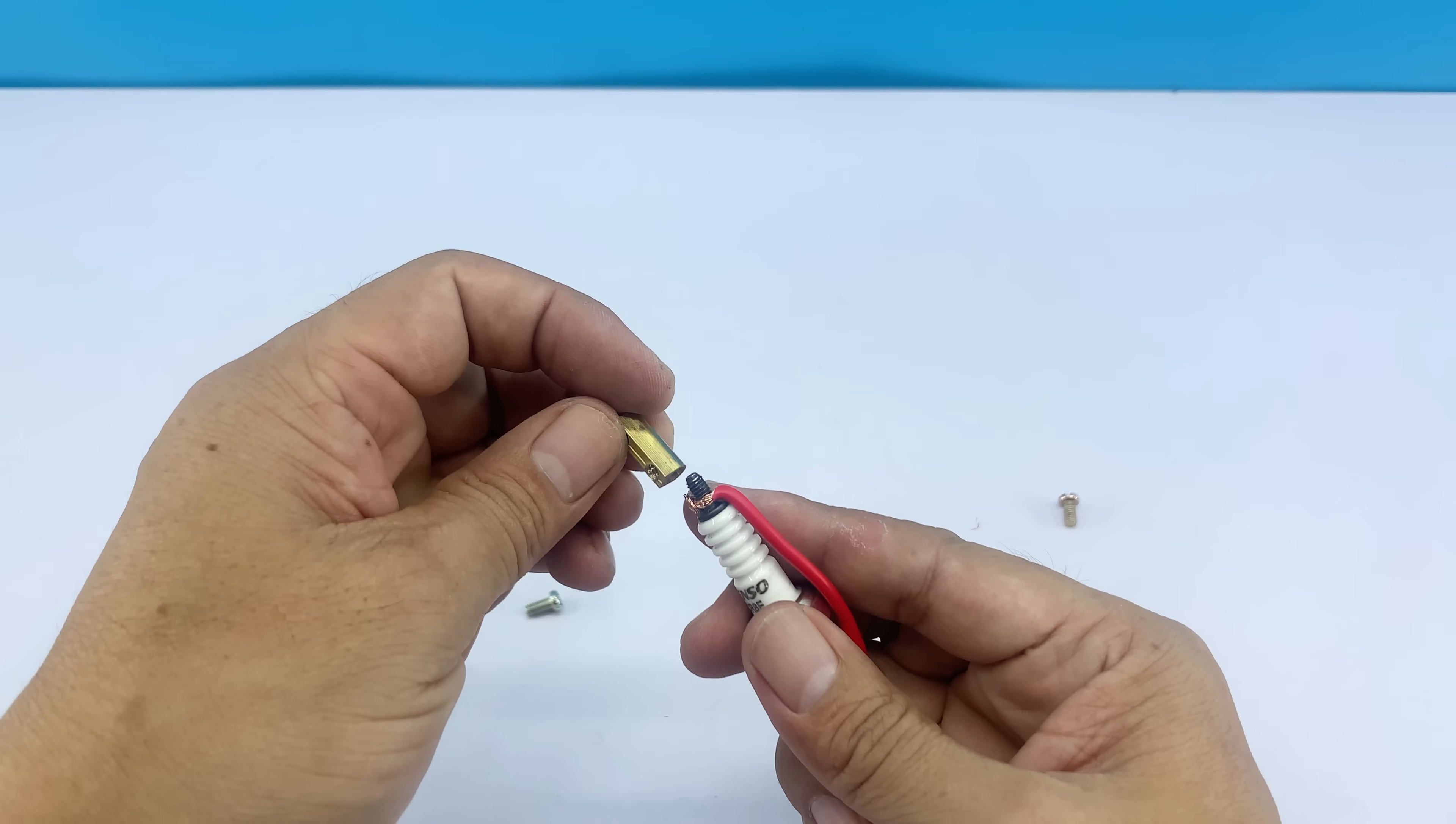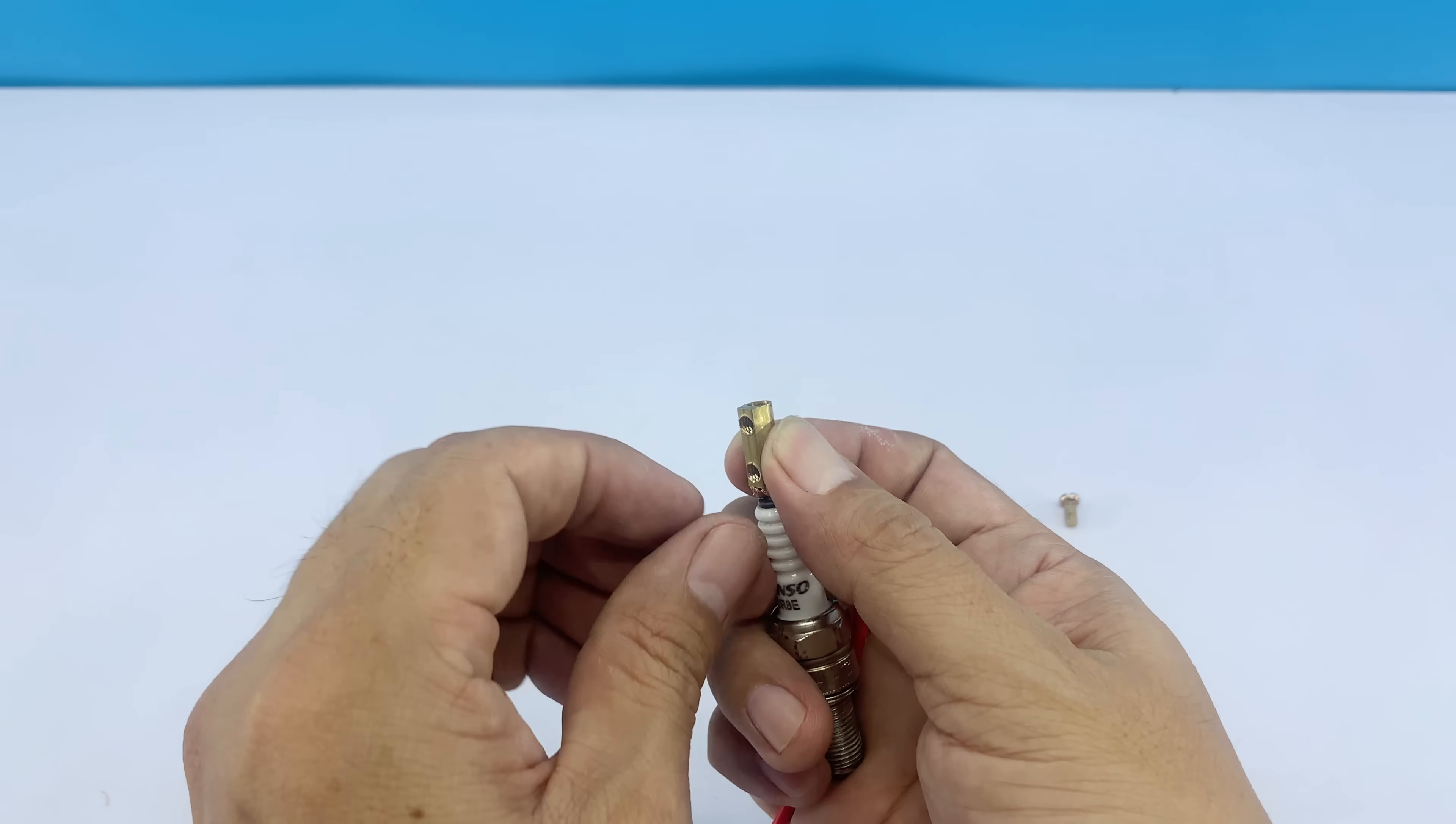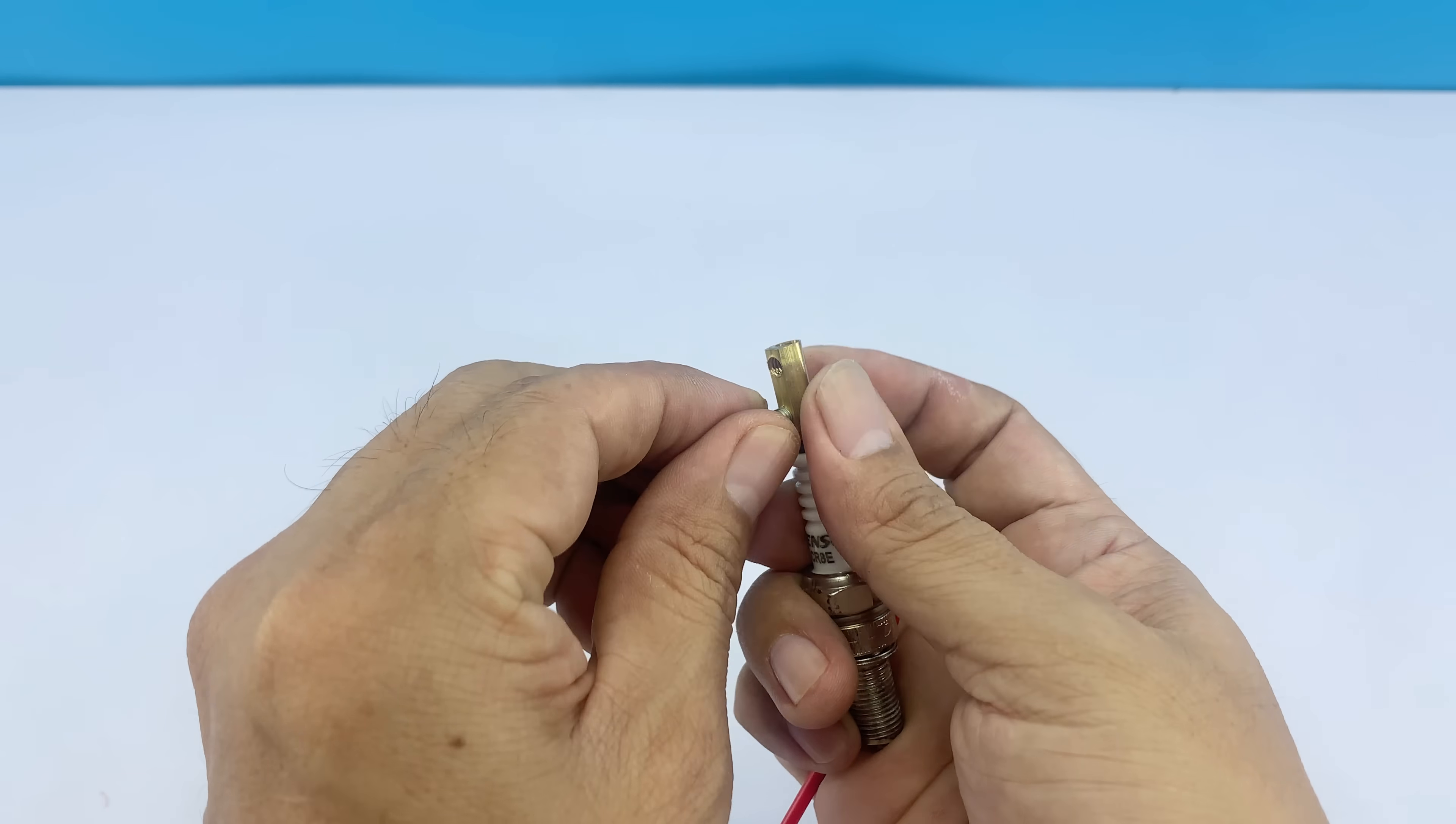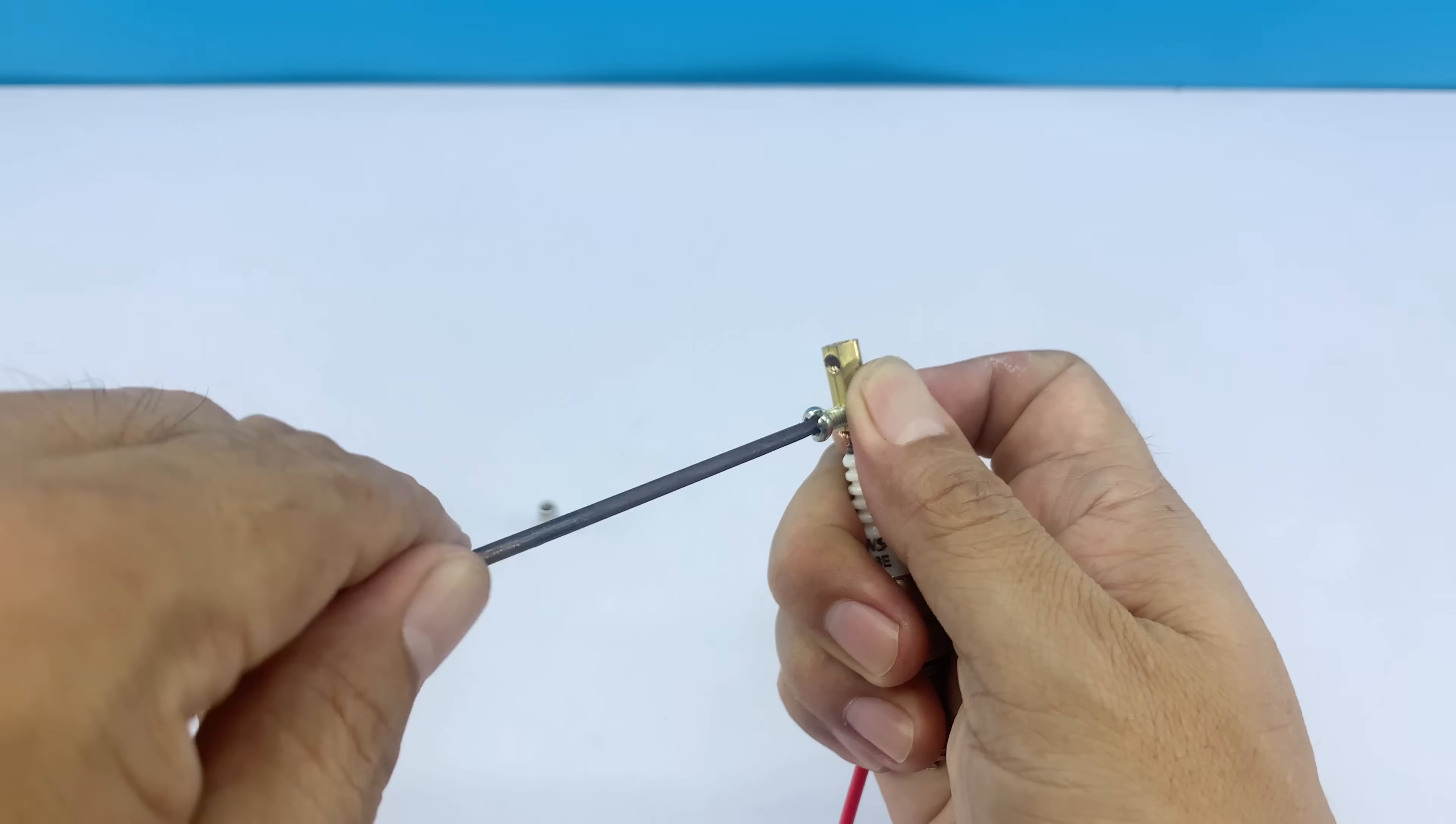After connecting one end of the wire to the threaded tip of the spark plug, I'll attach the connector we prepared earlier and secure it with a screw. This connector serves as an intermediary, so that later I can attach the soldering tip to the other end, allowing the spark plug to connect directly with the tip.